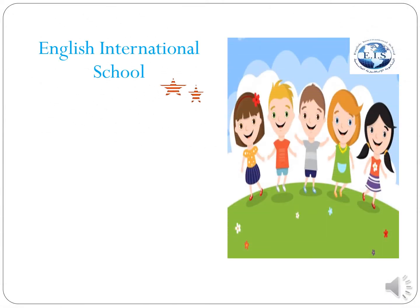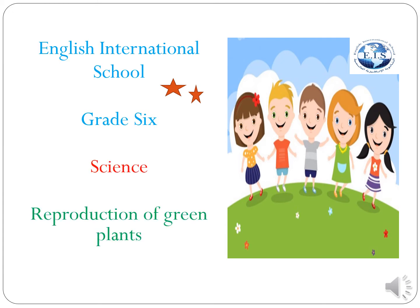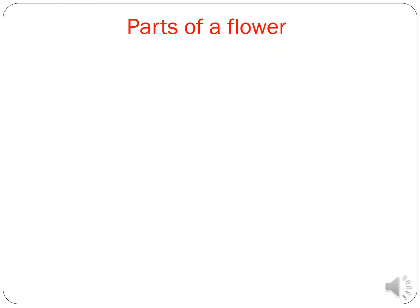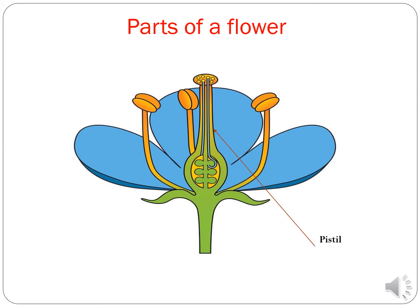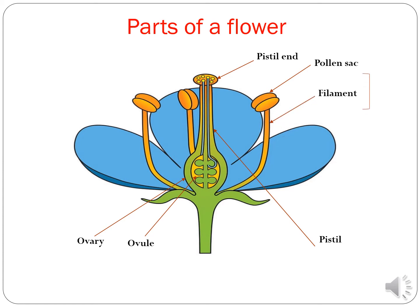Dear sixth graders, we are going to continue our science lesson on reproduction of green plants. Let's remember together the parts of the flower. The pistil carries an ovary, and the ovary encloses ovules. The stamen is made up of two pollen sacs at the top and a filament.